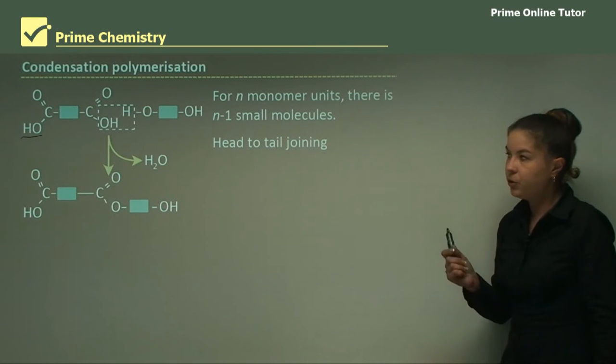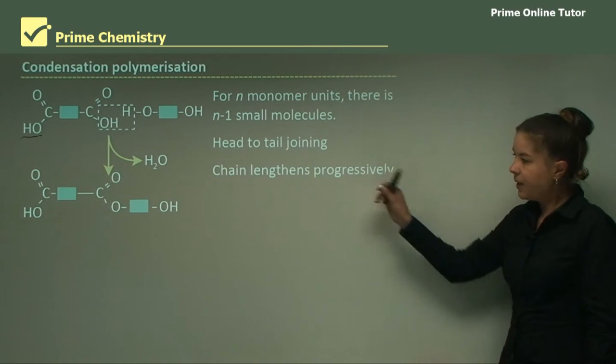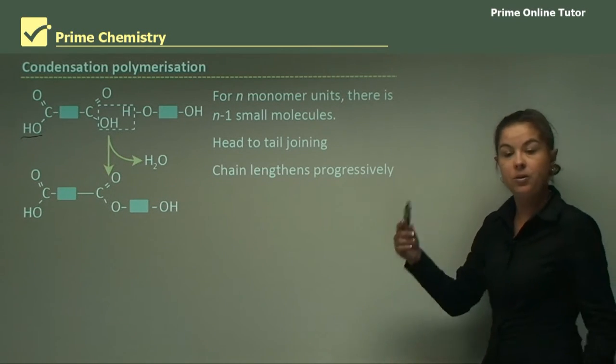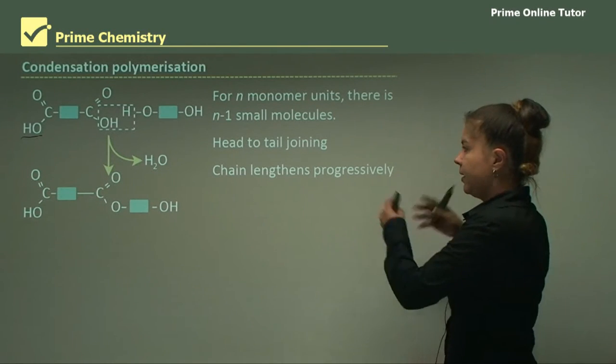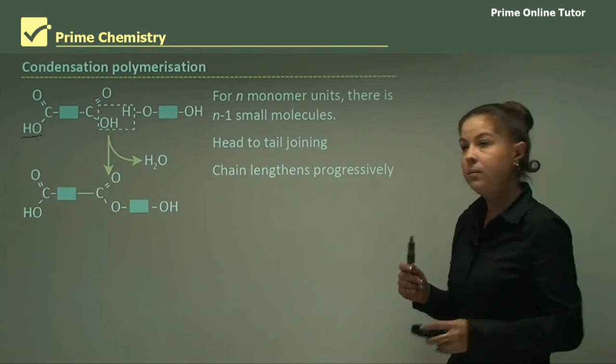It's head to tail joining and the chain lengthens progressively as it goes along. So monomer, monomer, monomer adds together to form a very long molecule.